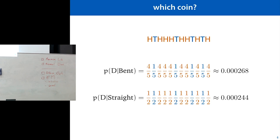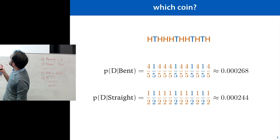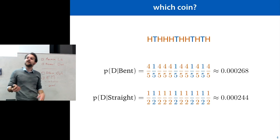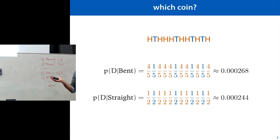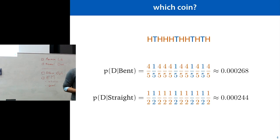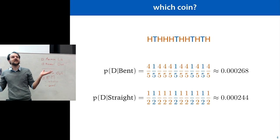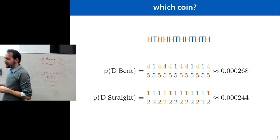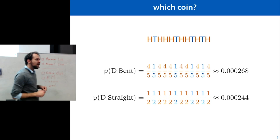So we can do this for our example and ask which coin gives us the highest probability. For the straight coin all probabilities are one half, so we multiply one half however many flips. For the bent coin it's four-fifths for heads and one-fifth for tails. What we see is that the bent coin gives a very slightly higher likelihood, so that's our maximum likelihood model. Everything else we do with maximum likelihood is just more complicated models, bigger model spaces, more complicated variables — instead of two things in your model space you can have infinitely many, continuous variables.